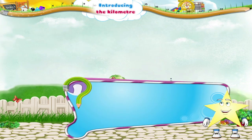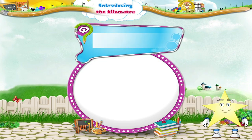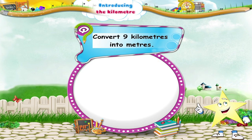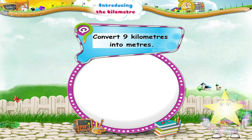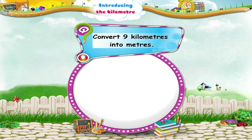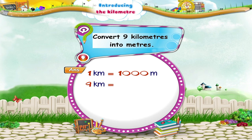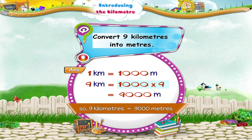Let us revise what we have learnt. Convert nine kilometres into metres. One kilometre equals one thousand metres, so nine kilometres equals one thousand into nine, which is nine thousand metres.